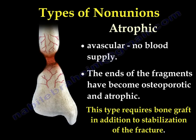The third type is atrophic — this is a bad one. It is avascular with no blood supply. The ends of the fragments become resorbed and atrophic. This type requires bone graft in addition to stabilization of the fracture.